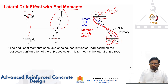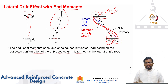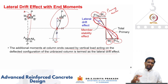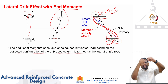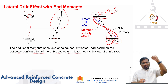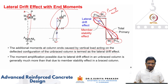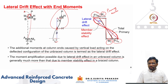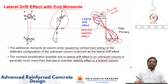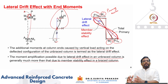The additional moment at column ends caused by vertical load acting on the deflected configuration of an unbraced column is termed the lateral drift effect. Braced columns experience only member stability effect. Unbraced columns experience both lateral drift effect and member stability effect. In an unbraced column, the moment amplification due to lateral drift is much larger than that due to member stability. Therefore, columns in unbraced frames are weaker than similar columns in braced frames.